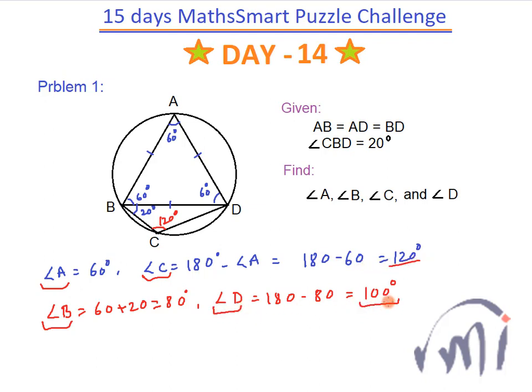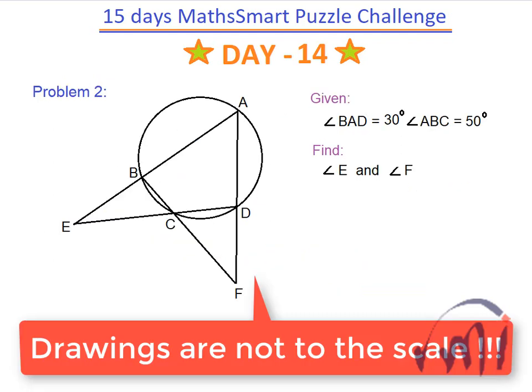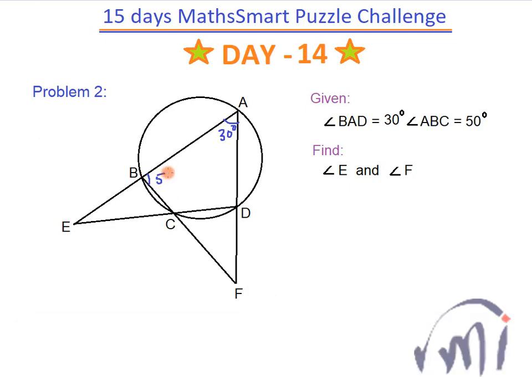Now let's go to the second problem. Here we are given that angle BAD is 30 degrees and angle ABC is 50 degrees.